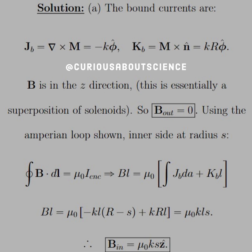Okay, B is in the Z direction. This is essentially a superposition of solenoids. So B outside is 0. Using the Amperian loop shown, inner side at radius S,